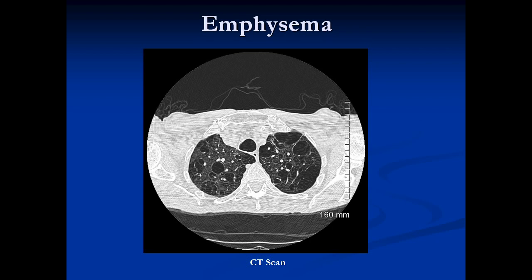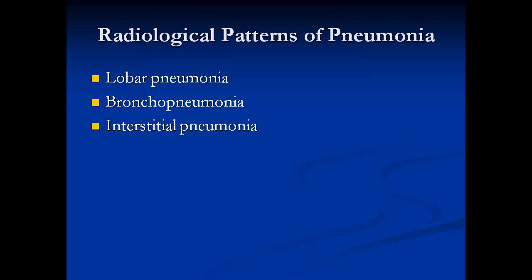Here's a CT scan example of emphysema, which shows holes in the lung — some of these are bullae and others are areas of emphysema. The last topic is the radiographic patterns of pneumonia. Basically, there are three different patterns of infection of the lung: a lobar pneumonia pattern, a bronchopneumonia pattern, and an interstitial pneumonia pattern. All three are distinct, all three are caused by different agents, and it's something you want to remember when looking at a chest x-ray.